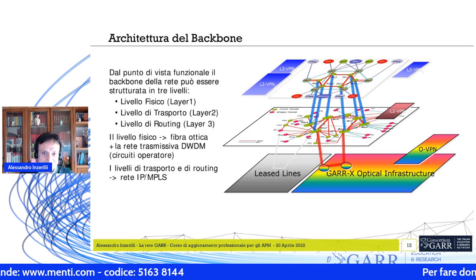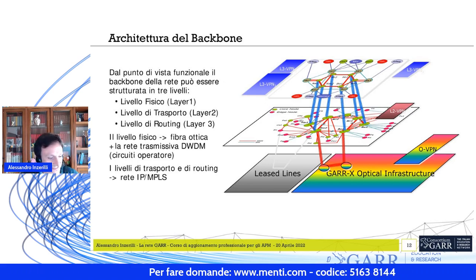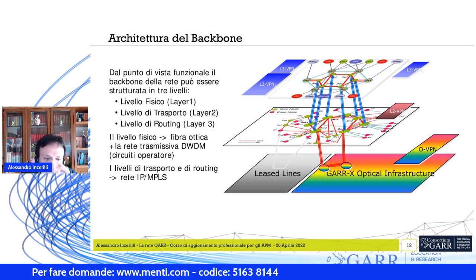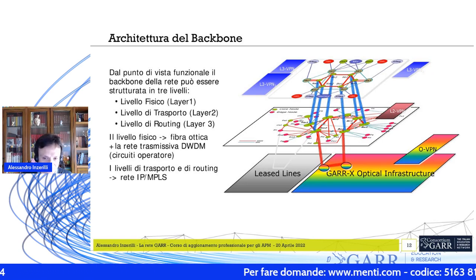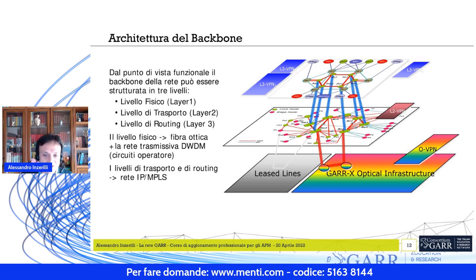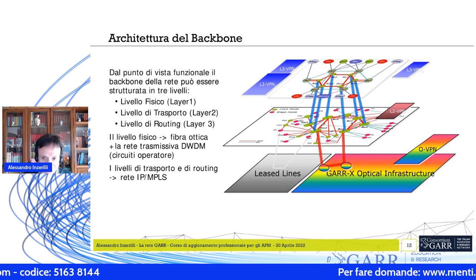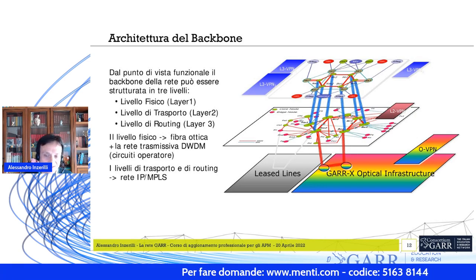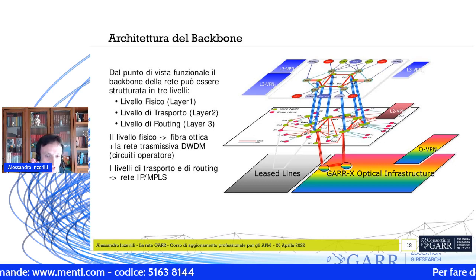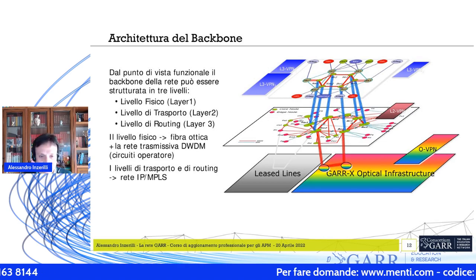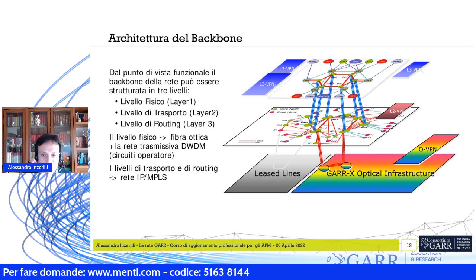L'architettura del backbone è rappresentata a livelli, rispecchiando l'architettura protocollare di rete. Si può vedere il livello fisico — quello delle fibre ottiche e dell'infrastruttura DWDM — e poi i livelli 2 e 3 della rete, i cosiddetti livelli di trasporto e di routing. Nel caso del GAR è di fatto la rete IP MPLS, implementata attraverso gli apparati di routing della rete GAR.